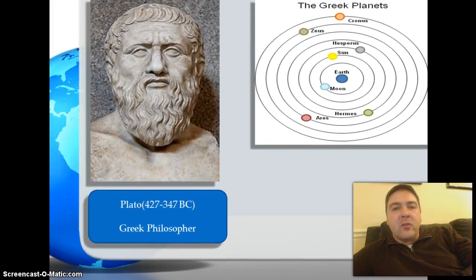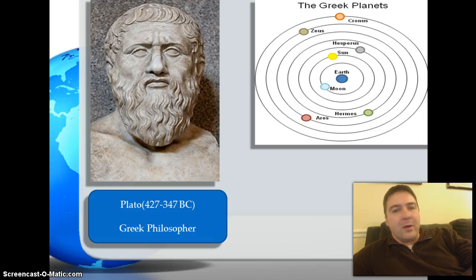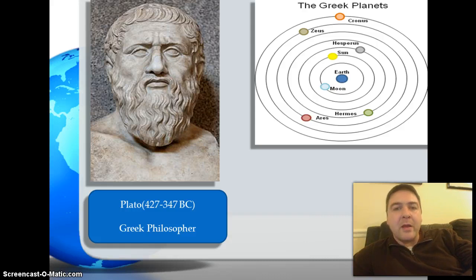Going back to the ancient Greeks, the Greeks really liked circles and saw them as the perfect shape. Because the universe was a big deal, they believed that the planets revolved in circles. The Greek philosopher Plato put forth the idea of circular movement of the planets — around the Earth, not the sun. We see the Greek model with the sun being one of the bodies going around the Earth.